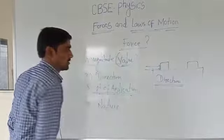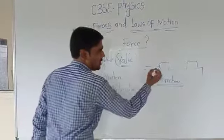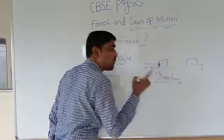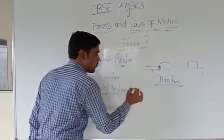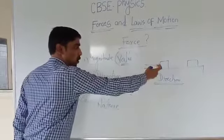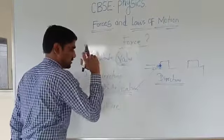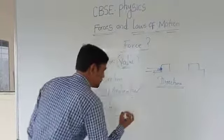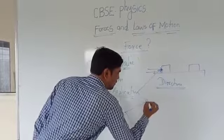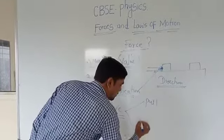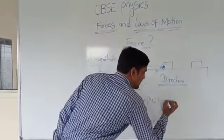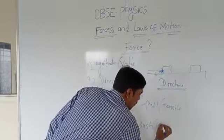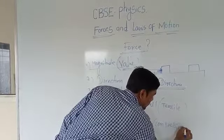What is the point of application? If you are applying the force at a particular point, that point is called the point of application — the point at which you apply the force. What about the nature? There are two types of nature: one is a pull nature and another is a push nature. Pull is also called tensile, and push is also called compressive.